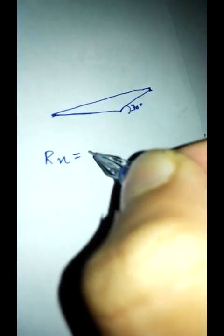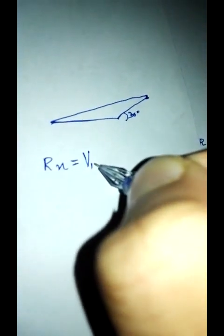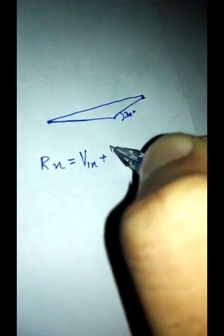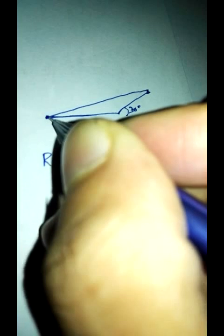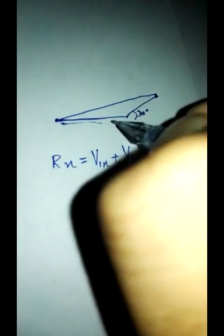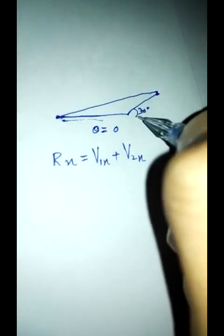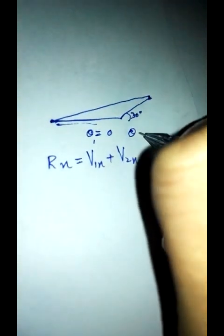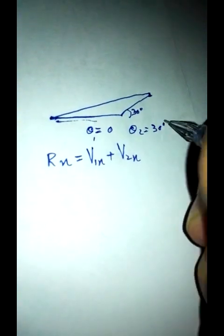The vectors have two components, x and y. The first vector's theta is 0 degrees since it's a straight line in the horizontal direction. The second vector's theta is 30 degrees. So theta 2 will be equal to 30 degrees.